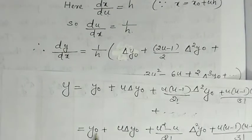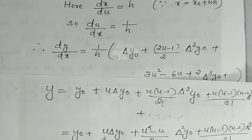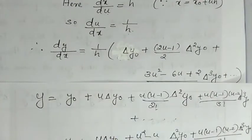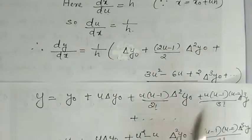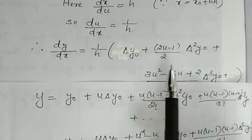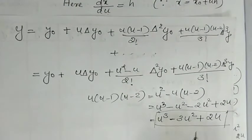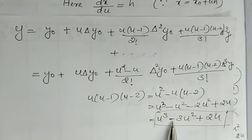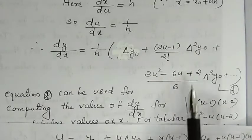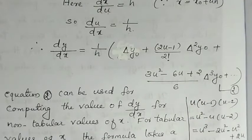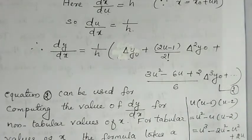Continuing: differentiating u·Δy₀ with respect to u gives Δy₀. Differentiating (u²−u)/2! gives (2u−1)/2! · Δ²y₀. Differentiating (u³−3u²+2u)/3! gives (3u²−6u+2)/6 · Δ³y₀, and so on. This gives Equation 2.